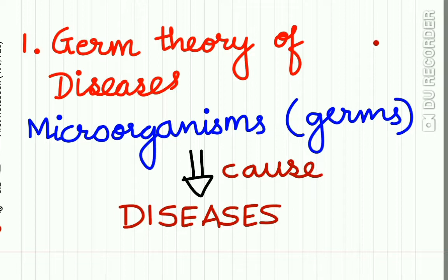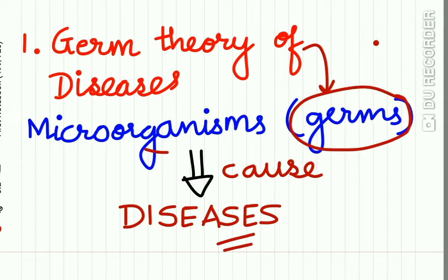First, he proposed and verified the germ theory of disease. According to this germ theory, microorganisms or germs cause disease, and this was verified by Robert Koch.